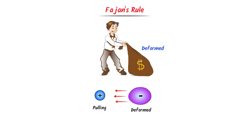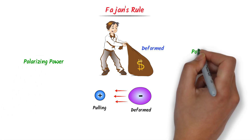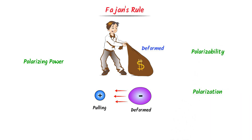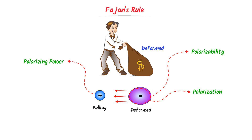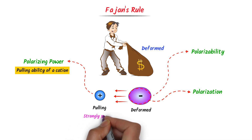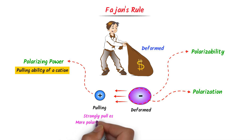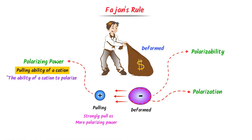Here we use three important terms: polarizing power, polarizability, and polarization. We use polarizing power for cations, polarizability for anions, and polarization for the electronic cloud. Polarizing power is the pulling ability of a cation. If a cation pulls the electrons of the anion strongly, we say it has more polarizing power — defined as the ability of a cation to polarize the nearby anion.